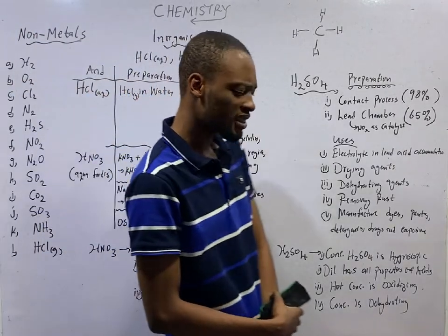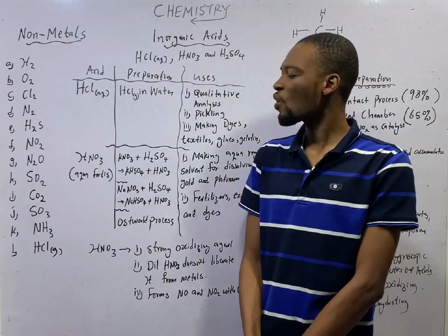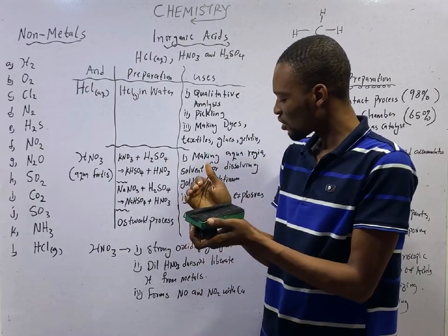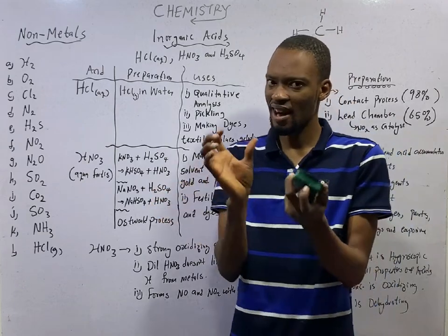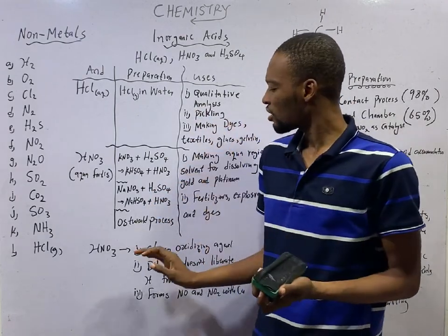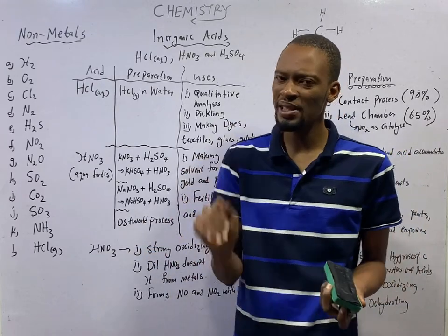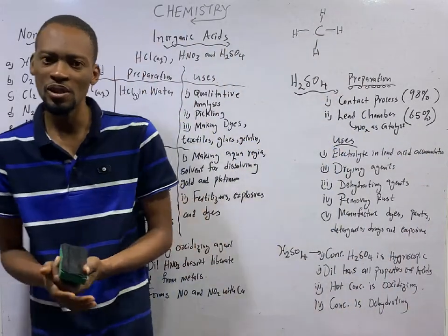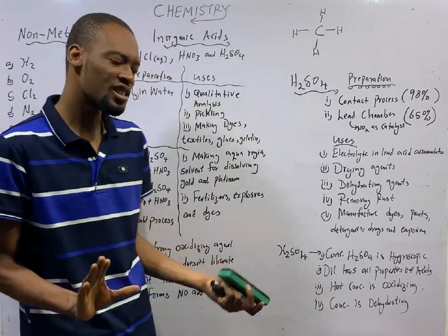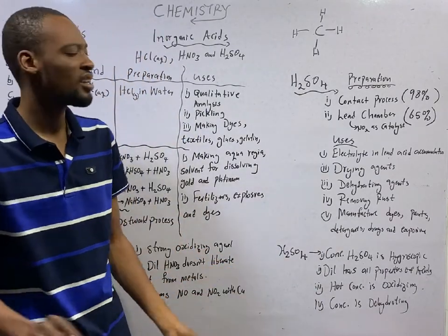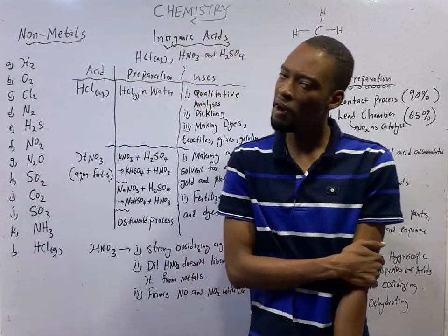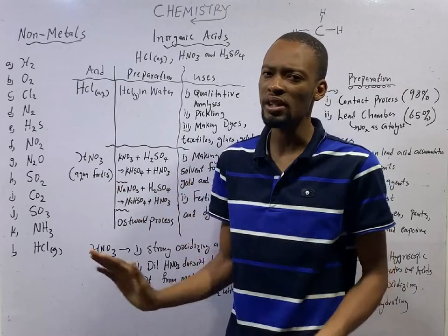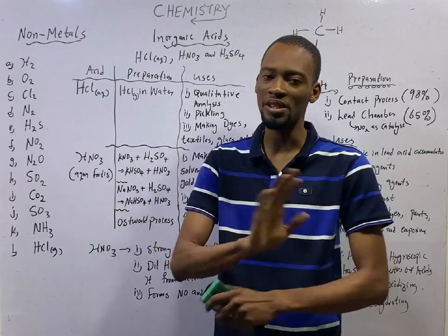Things you should know about HNO3 is that it is a strong oxidizing agent. And we know that when acid reacts with metals, hydrogen gas will be liberated. However, dilute HNO3 does not liberate hydrogen from metals. You may be asked, which of the following acids does not liberate hydrogen from metals? It is simply dilute HNO3. Why? It is simply because the hydrogen that is produced in the process will immediately be oxidized to water.